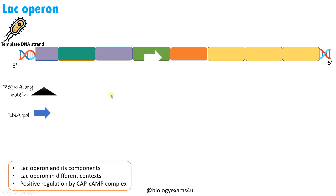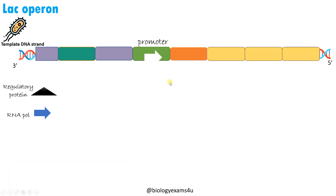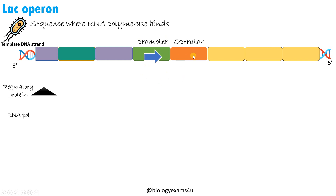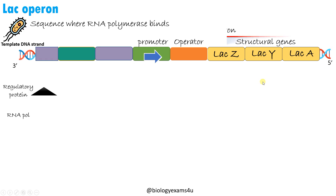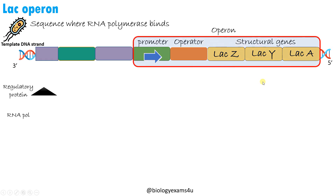This is the lac operon. It has a promoter sequence, which is a DNA sequence to which RNA polymerase binds and initiates transcription. Then there is an operator sequence, followed by structural genes. In lac operon the structural genes are lac Z, lac Y, and lac A. This promoter, operator, and structural genes together constitute an operon.